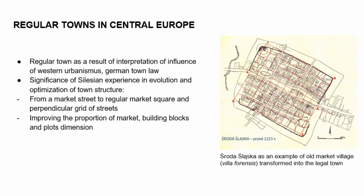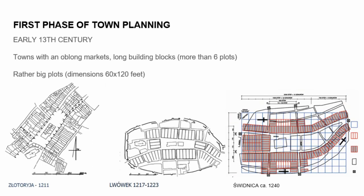Regarding regular towns in Central Europe: in Western Europe, over about three centuries, the pattern of regular towns developed gradually. We can observe many regular elements like rectangular squares and regular plots with regular dimensions, but this was very much optimized and simplified over time. For example, in the first phase of town planning at the beginning of the 13th century, we can see some regulation in town planning, but layouts were still very extended and the frontage of plots was very wide.